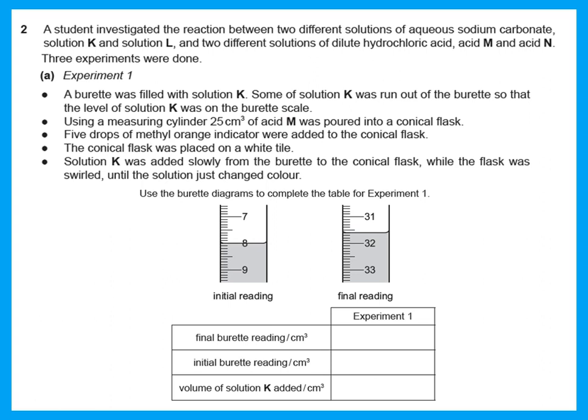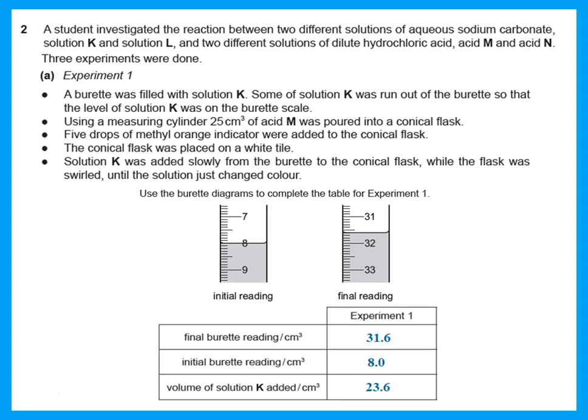Solution K was added slowly from the burette to the conical flask while the flask was swirled, until the solution just changed color. Read the burette carefully — all readings should be to one decimal place, and we always read from the small number to the big number, top to bottom. So this reading is 31.6, and the initial reading is 8.0.